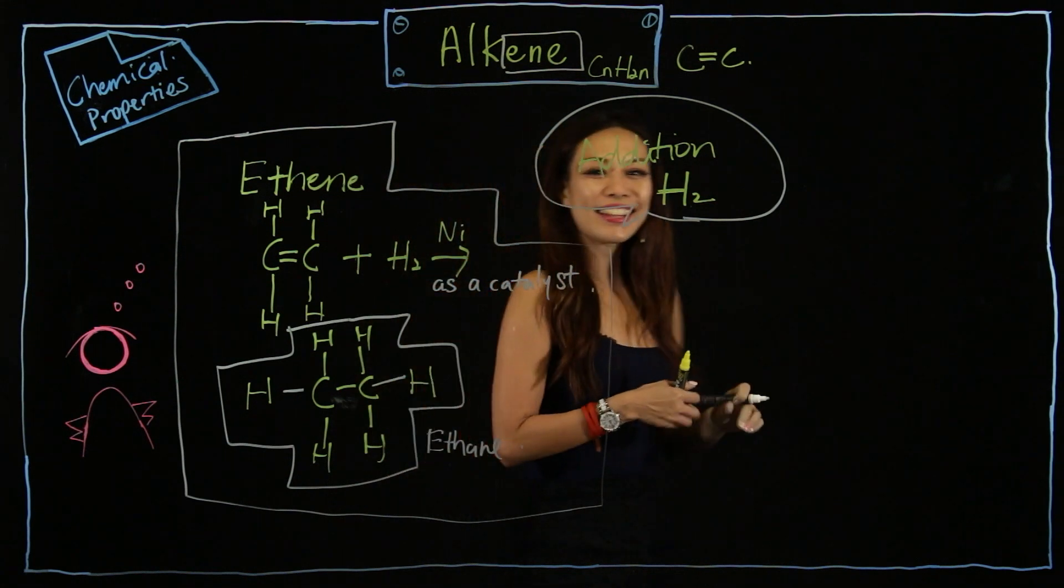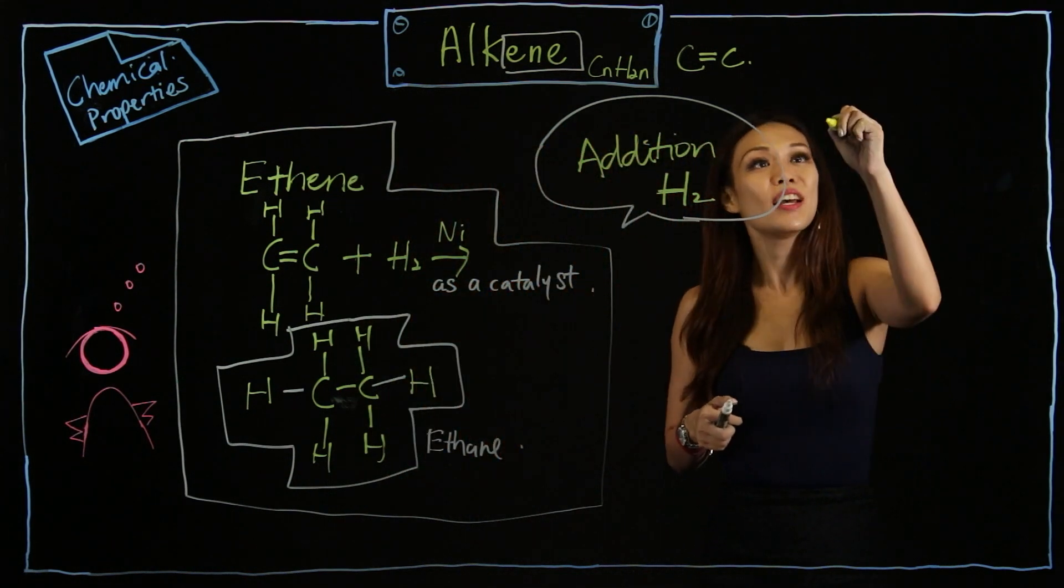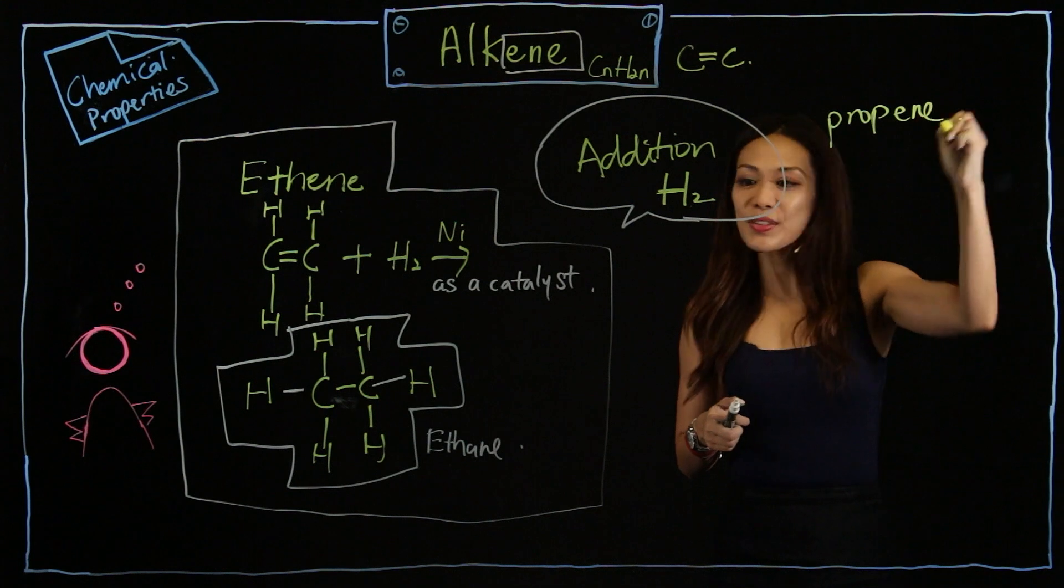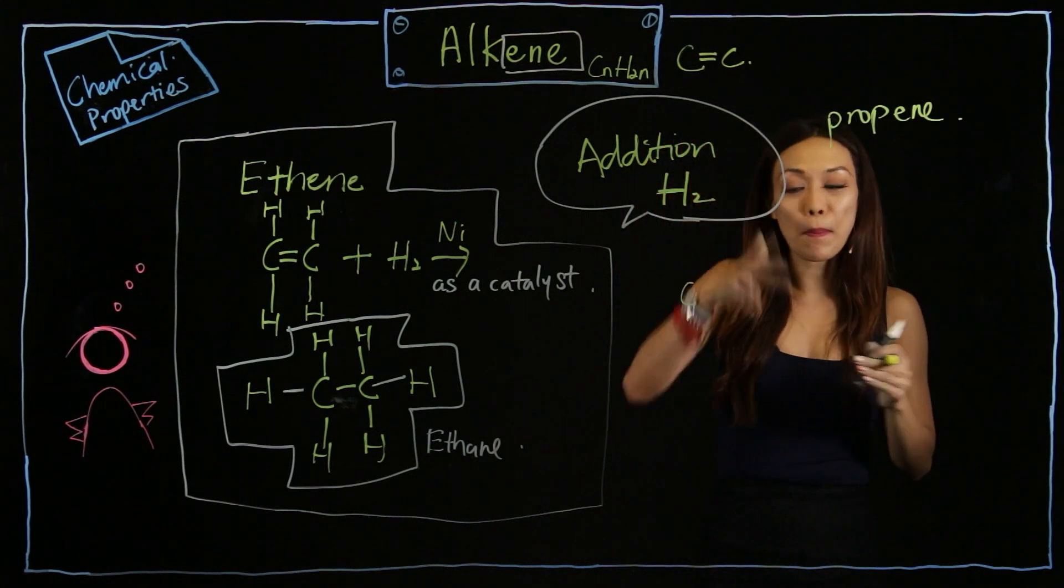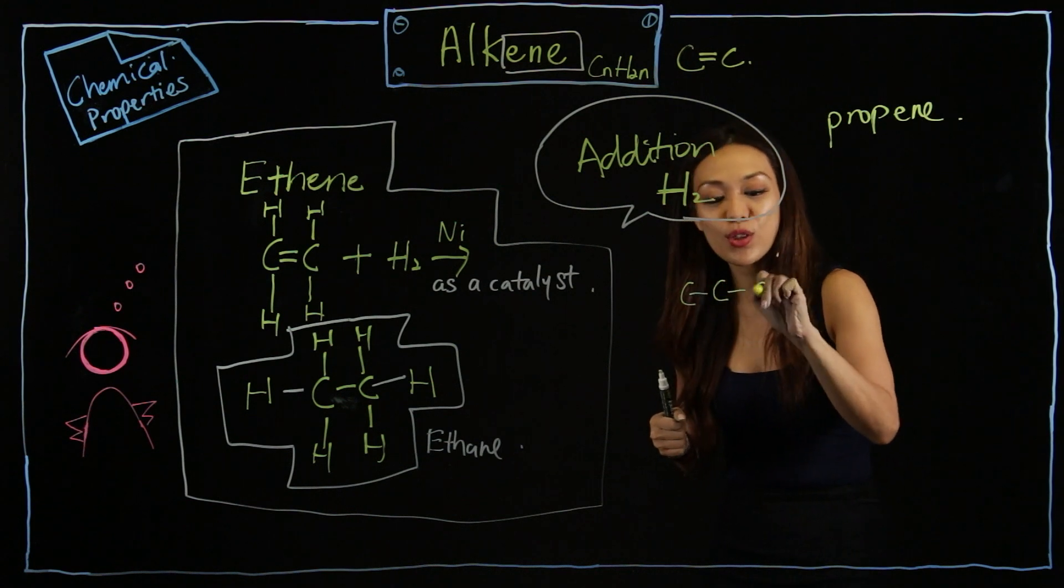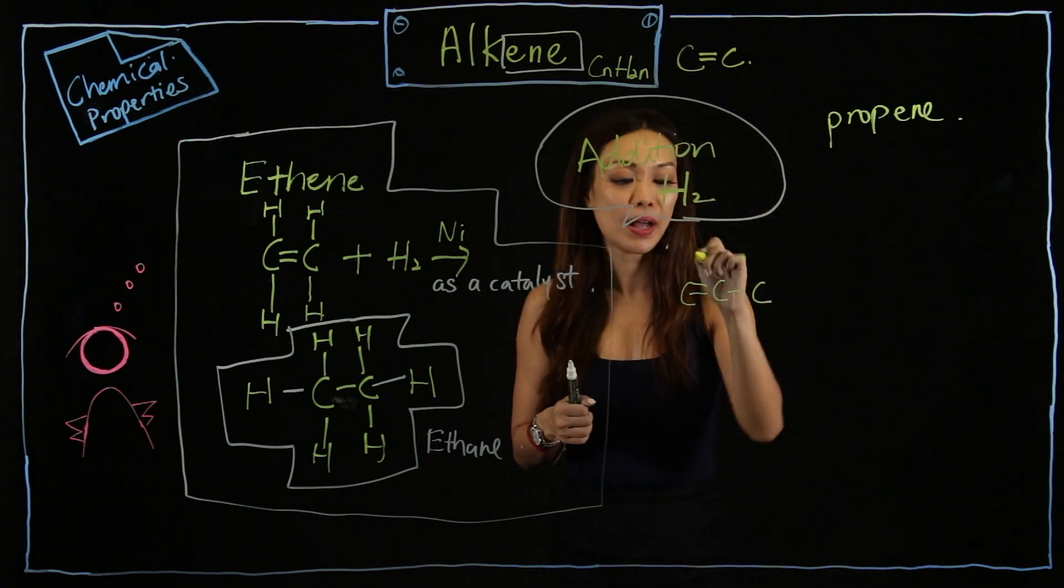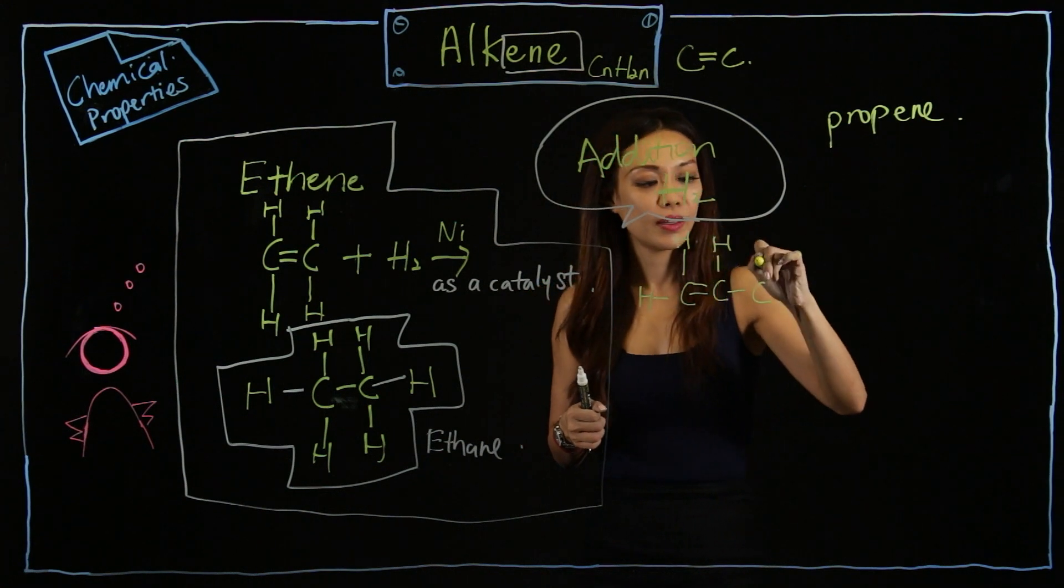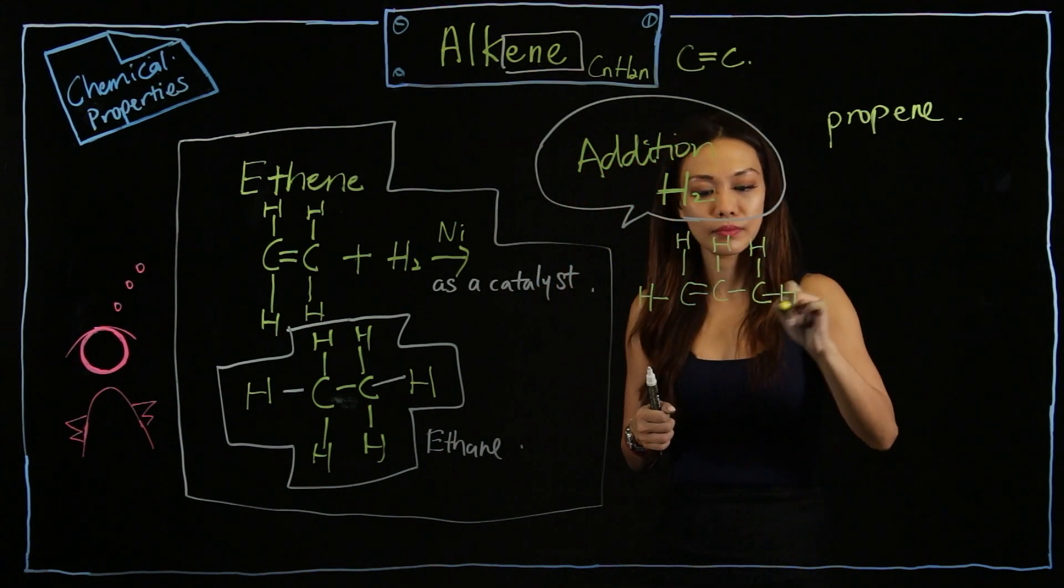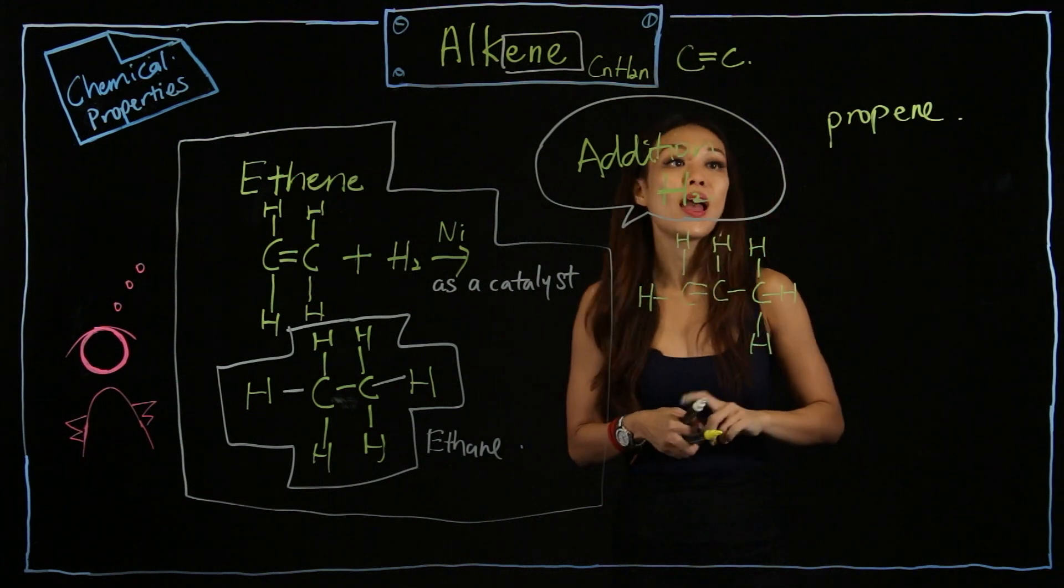Let me give you another example using propene. Now, if I use propene, do you still remember how many C are there? Monkey eat proper - so one, two, three. Same thing, only one double carbon bond. H, H.